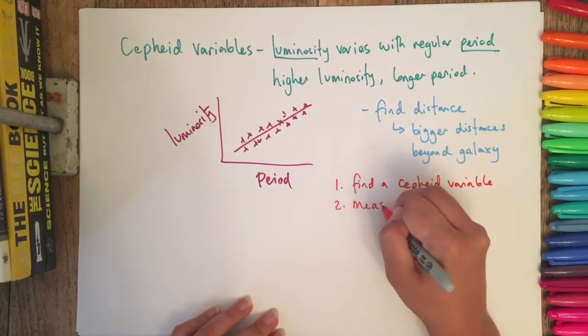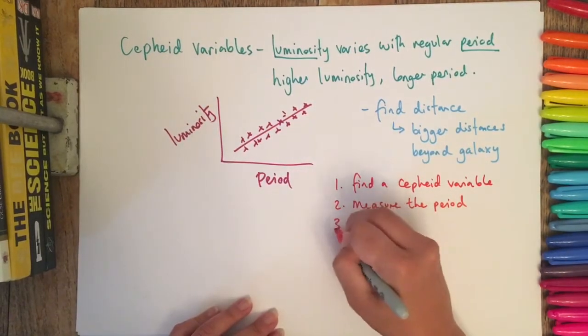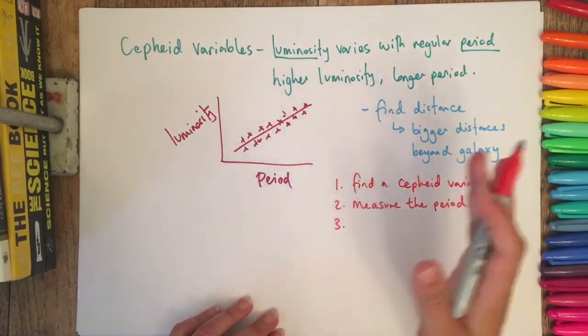Number two: you are going to measure the period, measuring how long it takes to go from bright to bright again.